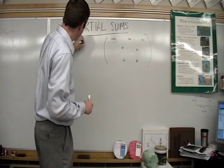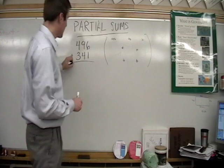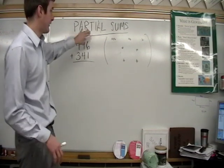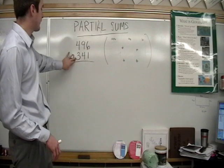We'll do a couple problems like this. We'll take the problem 496, we're going to add 341. Let's think about the parts that we add, partial sums. So I have 496, 341.